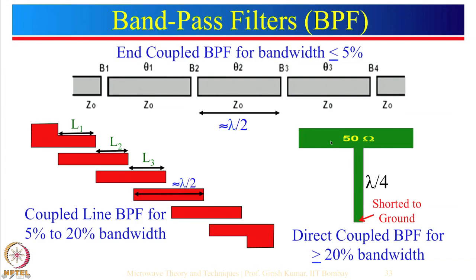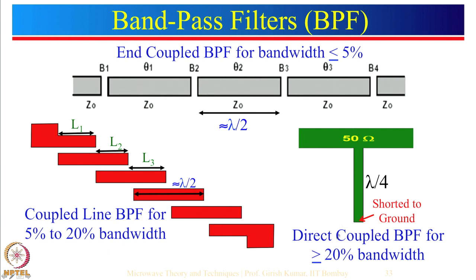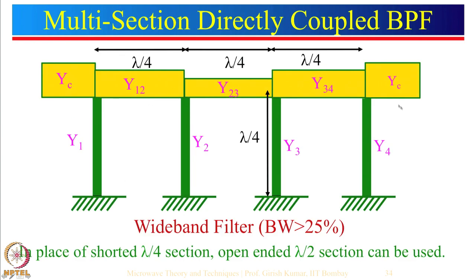We then shifted to using microstrip lines to realize band pass filters. We talked about end-coupled filters, where coupling is done at the end of the resonator — this is good for bandwidth less than 5 percent because coupling is relatively weak. By using coupled lines, we can increase the coupling between resonators and bandwidth can be increased from 5 percent up to about 20 percent. For larger bandwidth, direct coupled band pass filters are generally used. A short at the end of a lambda-by-4 length acts as an open circuit, so input goes to the output. Multiple lambda-by-4 shorted sections can be used, or alternatively open-ended lambda-by-2 sections.